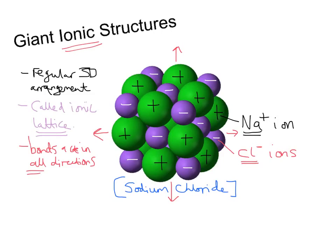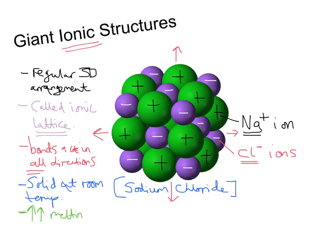All ionic compounds form crystals when solid, with flat sides and straight edges. Ionic bonds are very strong and require a lot of heat to break them. This means that ionic compounds are solid at room temperature and have very high melting and boiling points. So they tend to be solid at room temperature, and have very high melting and boiling points.